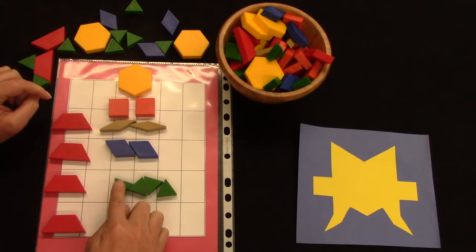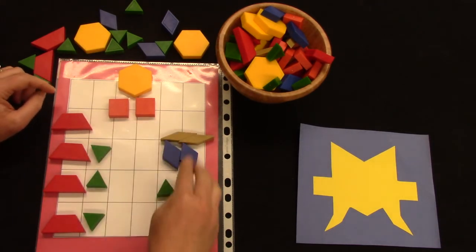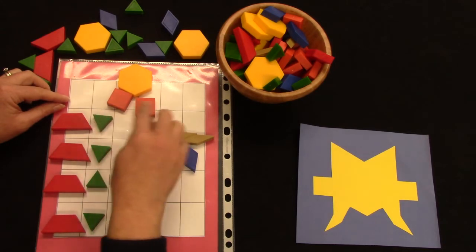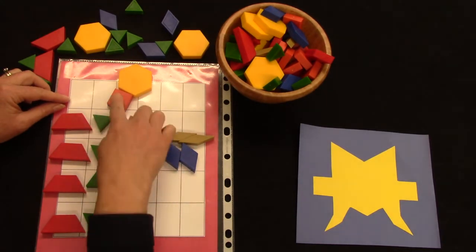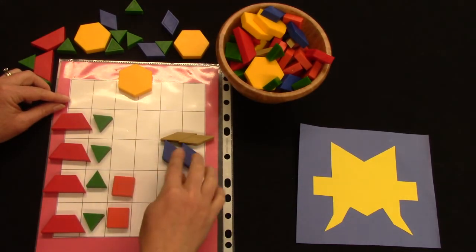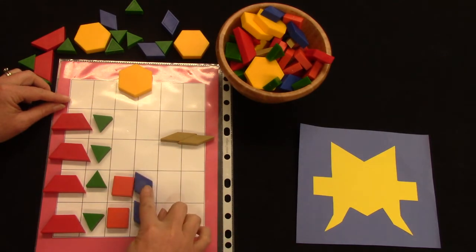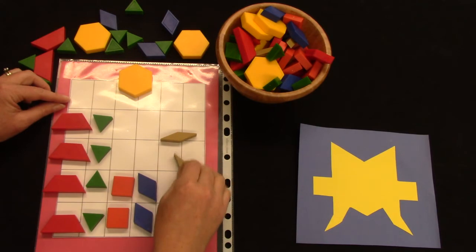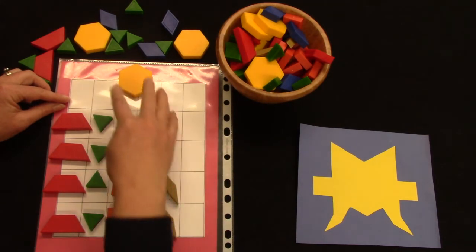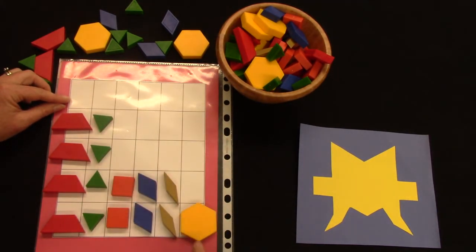How many triangles? One, two, three, four. I have one, two squares. I have two rhombus and two of the skinny rhombus and I have a hexagon.